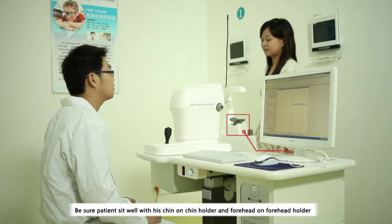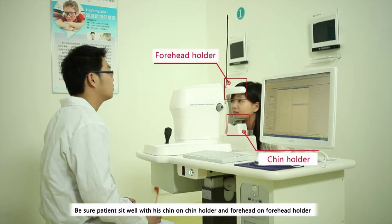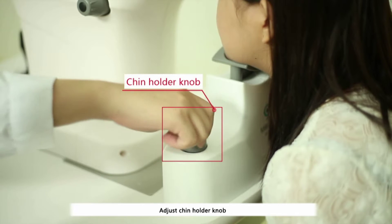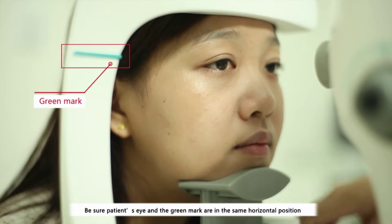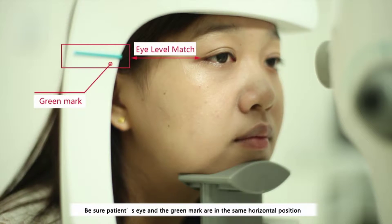Be sure patient sits well with his chin on chin holder and forehead on forehead holder. Adjust chin holder knob. Be sure patient's eye and the green mark are in the same horizontal position.